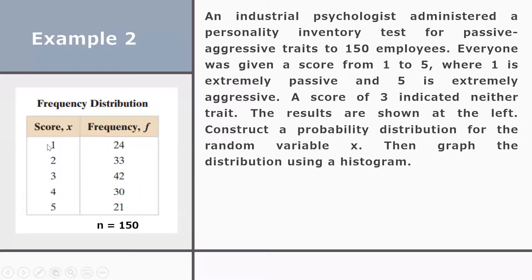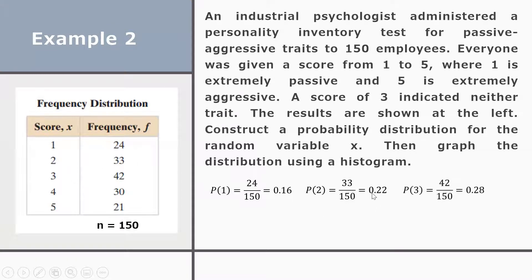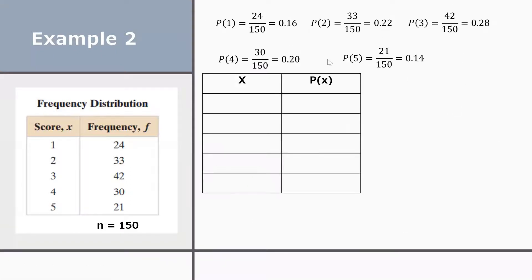The probability of a score of 1 is 24/150 = 0.16. For a score of 2: 33/150 = 0.22. For a score of 3: 42/150 = 0.28. For a score of 4: 30/150 = 0.20. For a score of 5: 21/150 = 0.14. These probabilities are now placed in the distribution table.